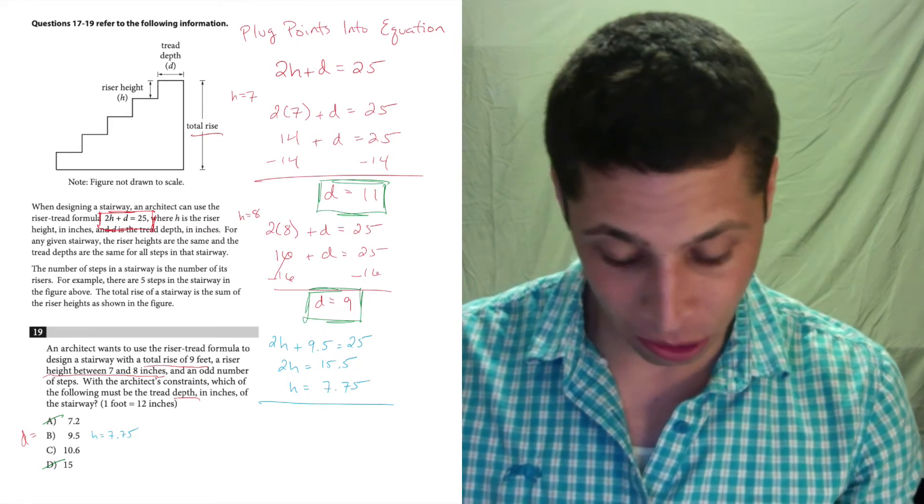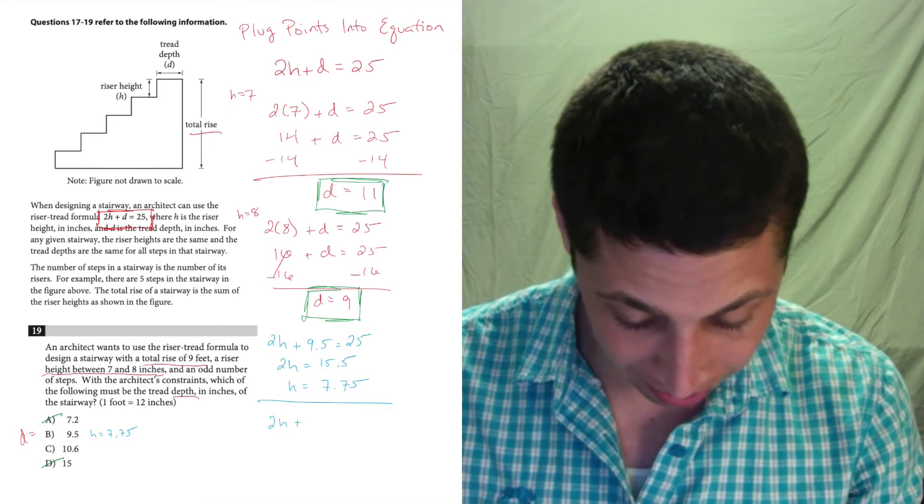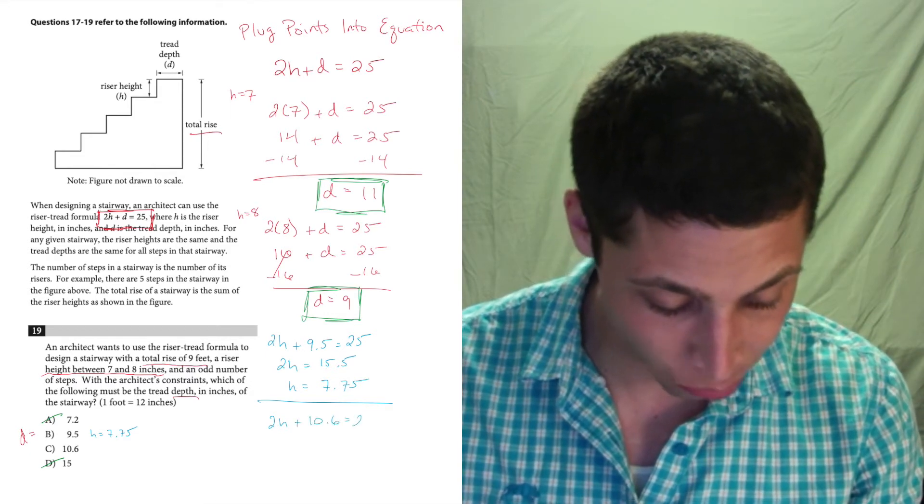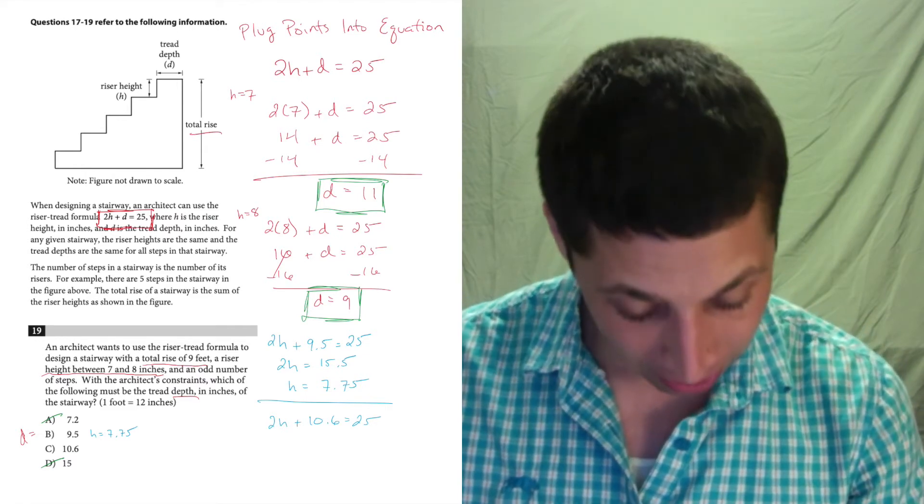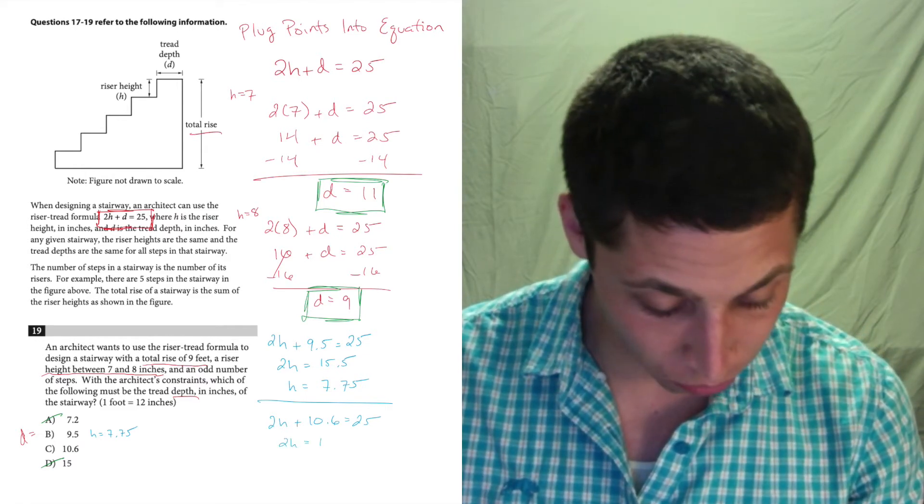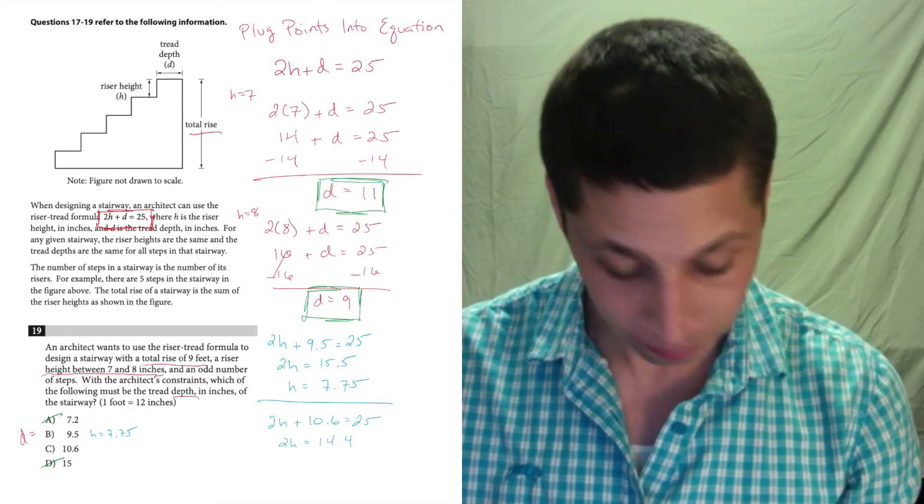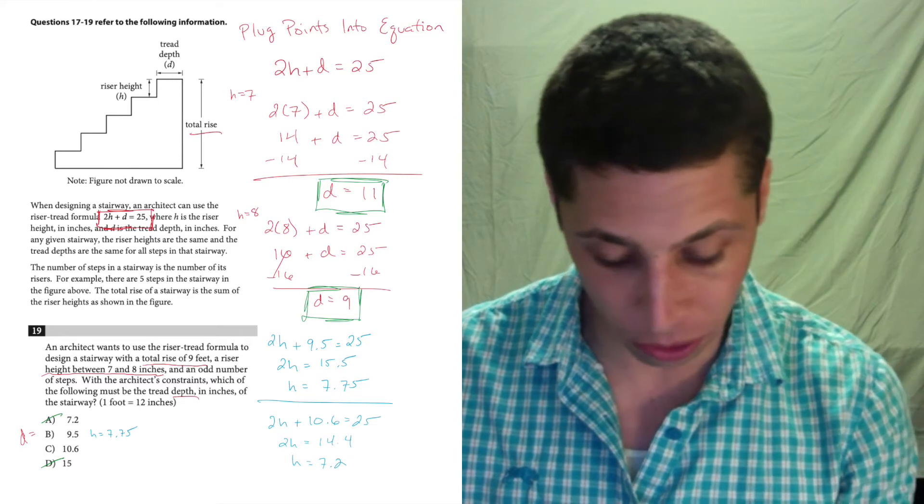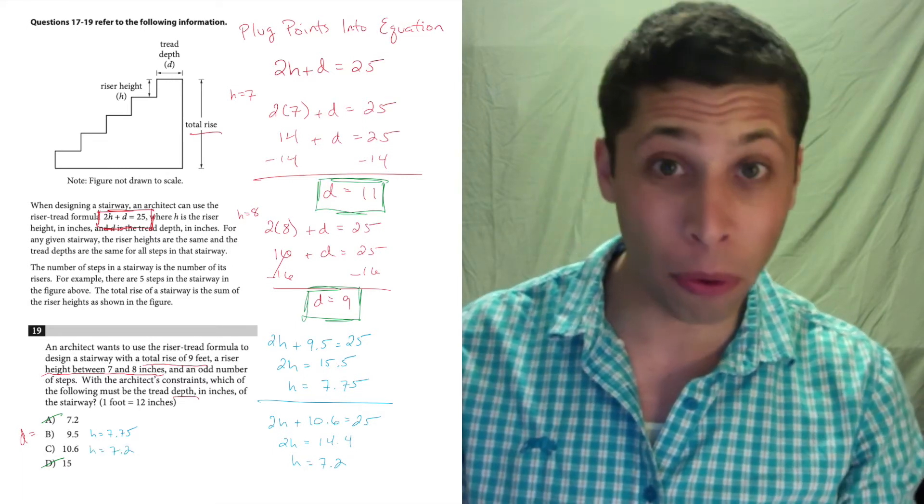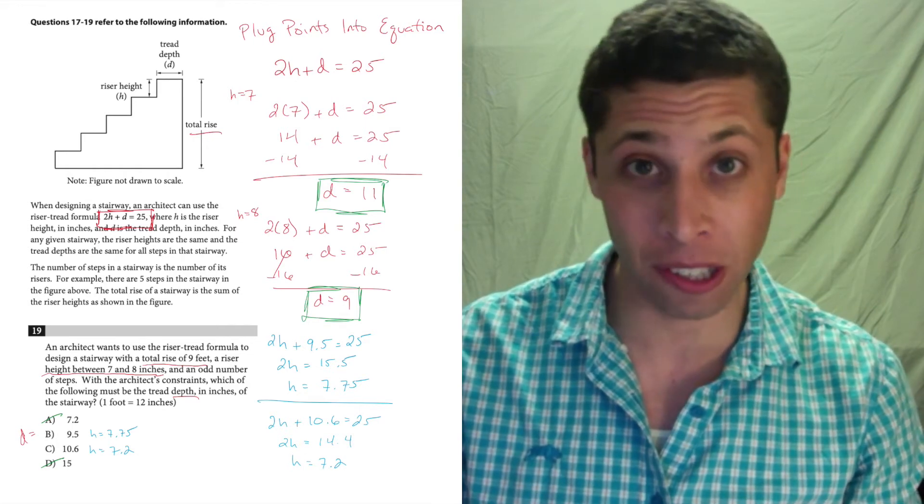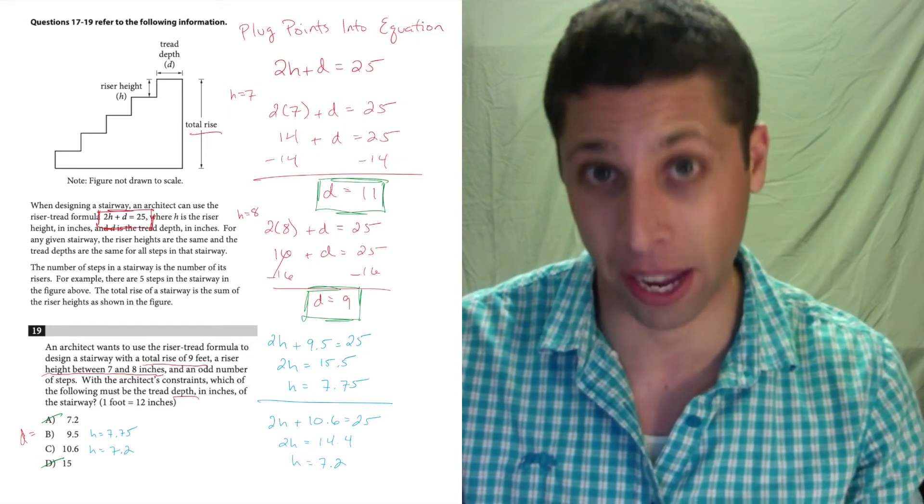Well, let's do it for C, too. 2h plus 10.6 equals 25. Again, use the calculator, and we get 2h equals 14.4, then divide by 2, and we get that h is equal to 7.2. Those both fit the range of the h's that we had before. That makes sense, though. We shouldn't have gotten the same answer there.